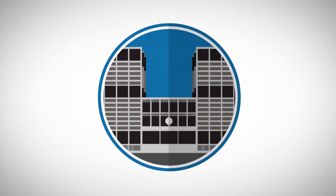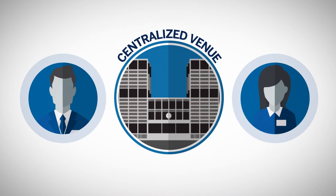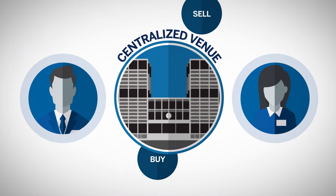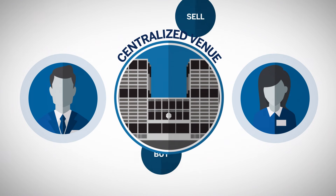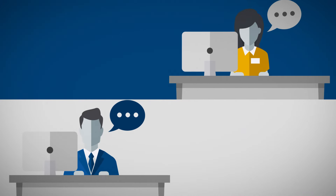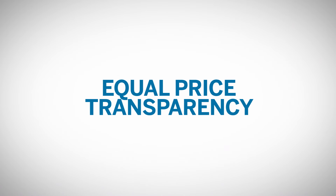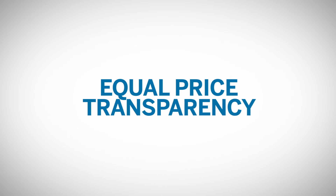The exchange served this function, providing a centralized venue for hedgers and speculators to buy and sell futures contracts and, most importantly, to have these transactions cleared. Unlike forwards, which continue to be negotiated between two individuals, futures are traded on an open market, anonymously, with equal price transparency for all participants.